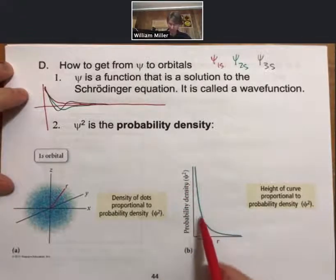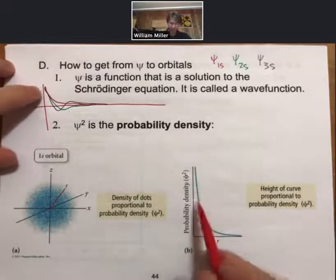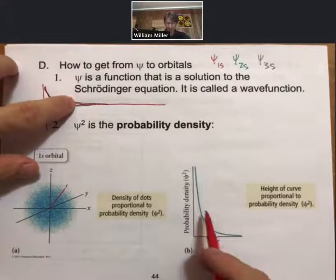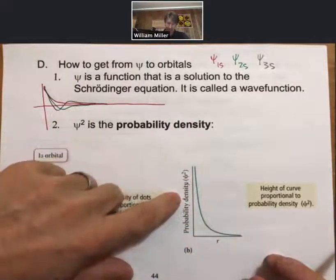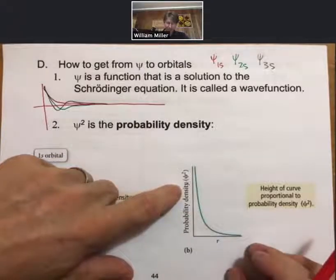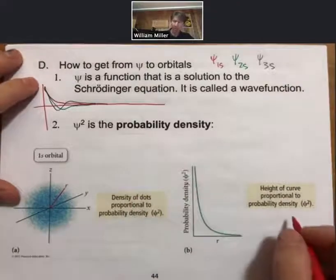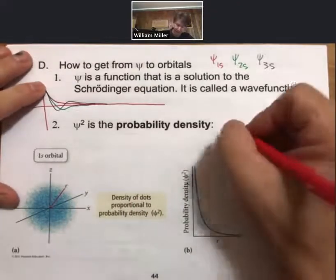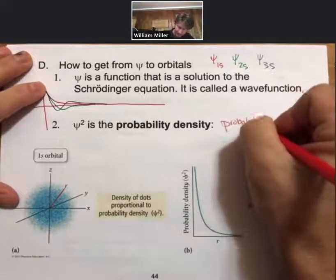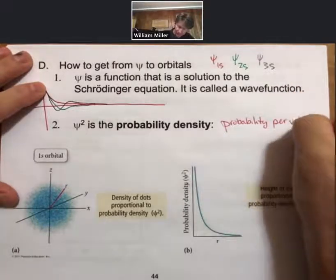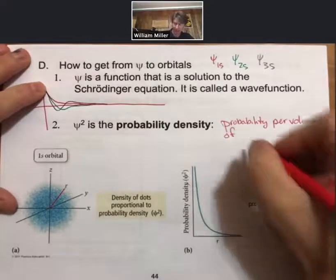So that's going to just basically make it squared of the function before. So the red one, which was always positive, is still always positive. And that means that the probability density, that's going to be the probability per volume of finding the electron.